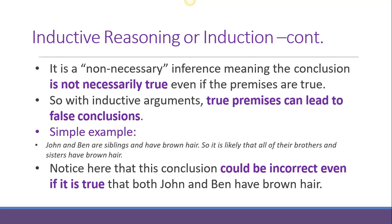Here's a basic example to illustrate: John and Ben are siblings and have brown hair, so we might conclude all of their brothers and sisters also have brown hair. It is likely that if these two siblings have brown hair, their other siblings will as well. However, this conclusion could still be incorrect — the only way to verify it is to go look at the hair color of their other siblings.